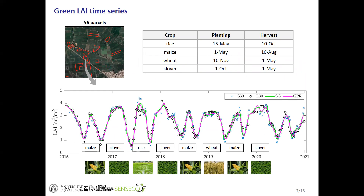The phenology extraction procedure was carried out at the parcel level. We averaged the Green-LAI time series within the parcel limits and then applied the phenology estimation procedure. We had information on crop types planted from 2016 to 2019 for 56 parcels in total. Each year, two different crops are planted and harvested, so the maximum number of crop seasons detectable per parcel is eight. Unfortunately, we did not have exact planting and harvesting dates, so we used the fixed crop calendar as a reference.